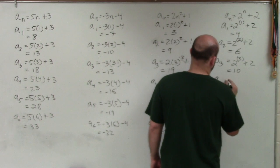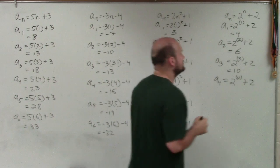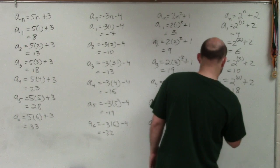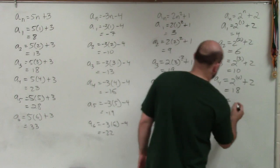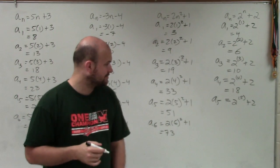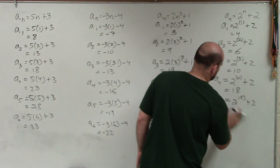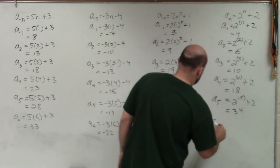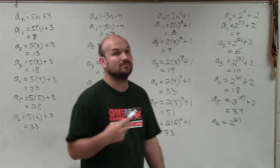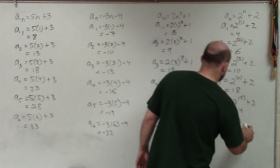Then I have a to the fourth, which is going to be 2 to the fourth plus 2. So 2 to the fourth is going to be 16 plus 2 is 18. I have 2 to the fifth power, which is going to be 2 to the fifth plus 2. So 2 to the fifth power is going to be 32 plus 2 is 34. And then last but not least is a sub 6, so 2 to the sixth power. That means 2 multiplied by itself six times is going to be 64 plus 2 is 66.